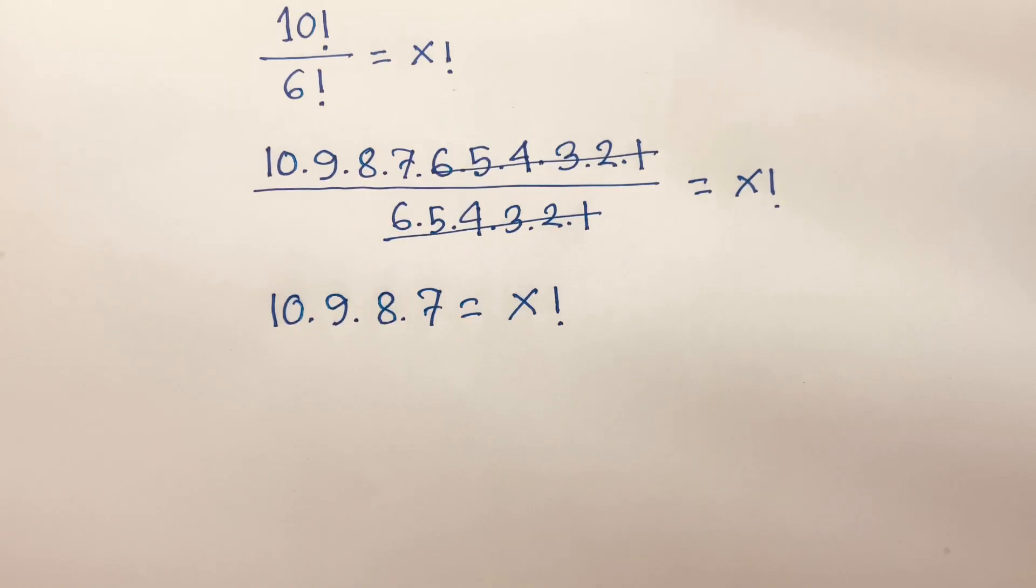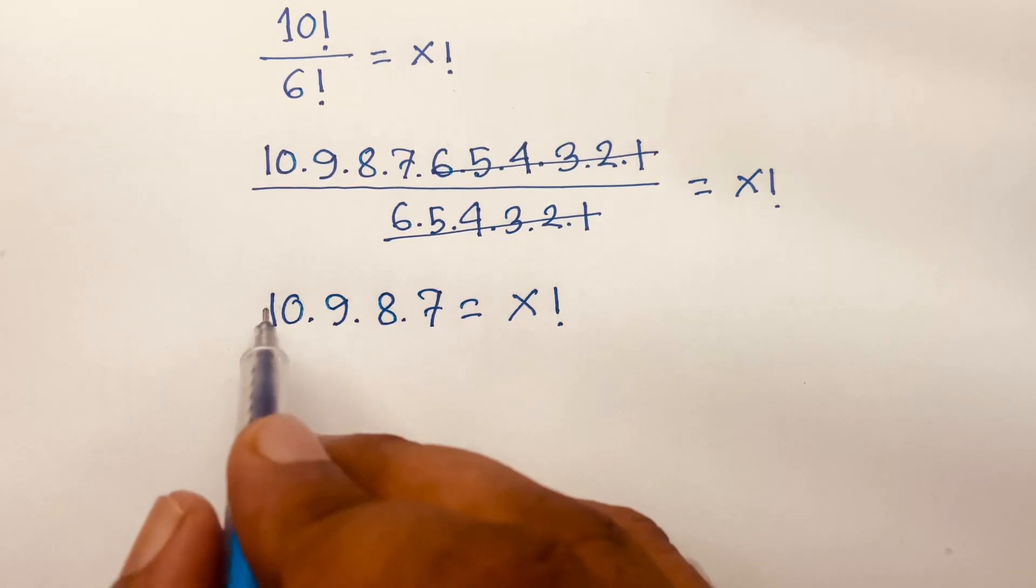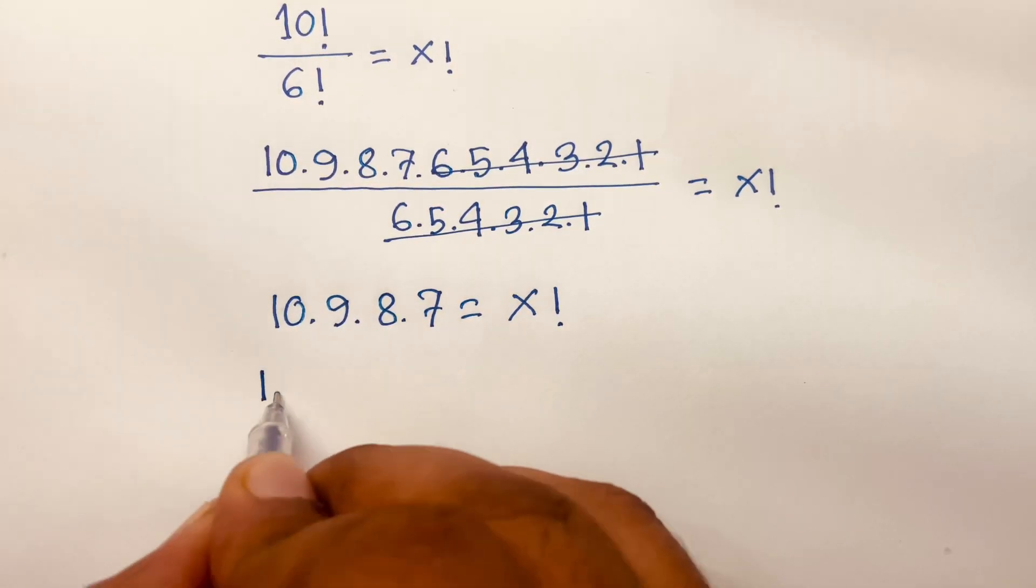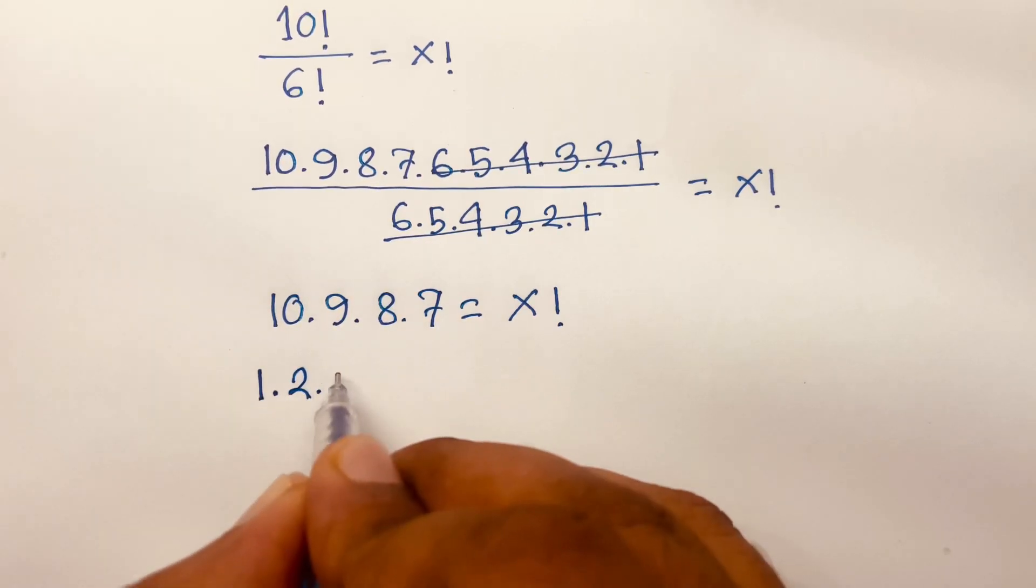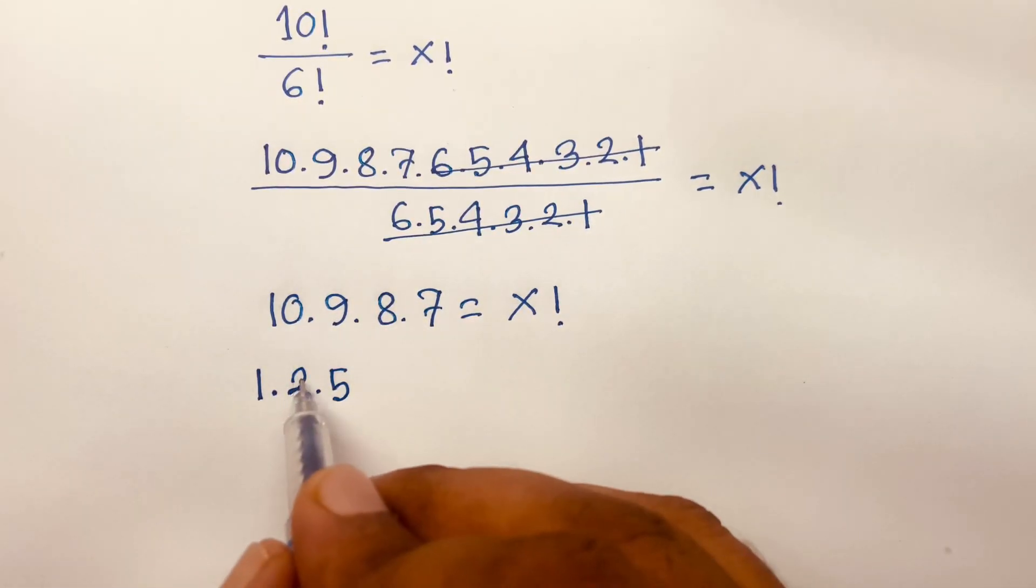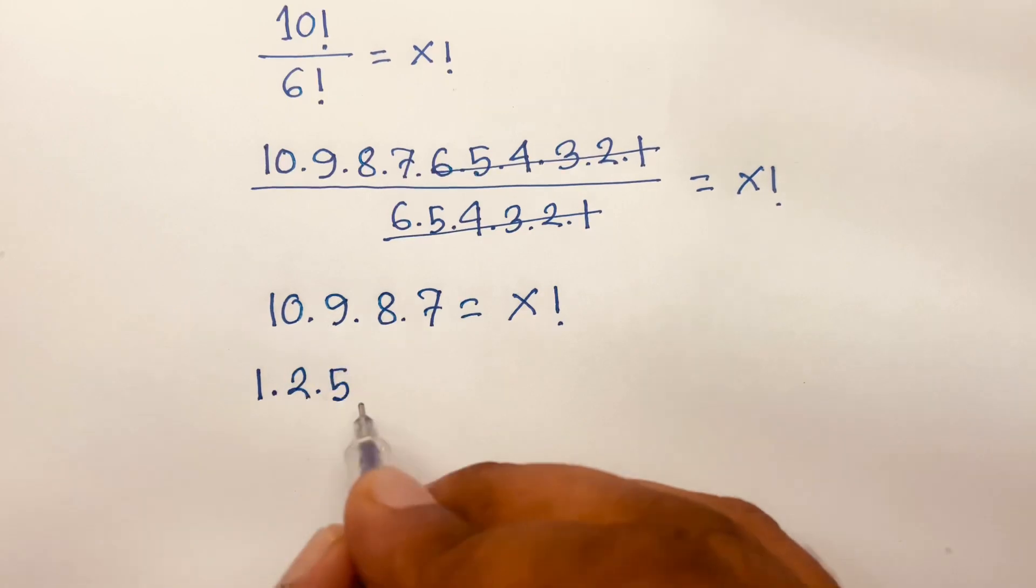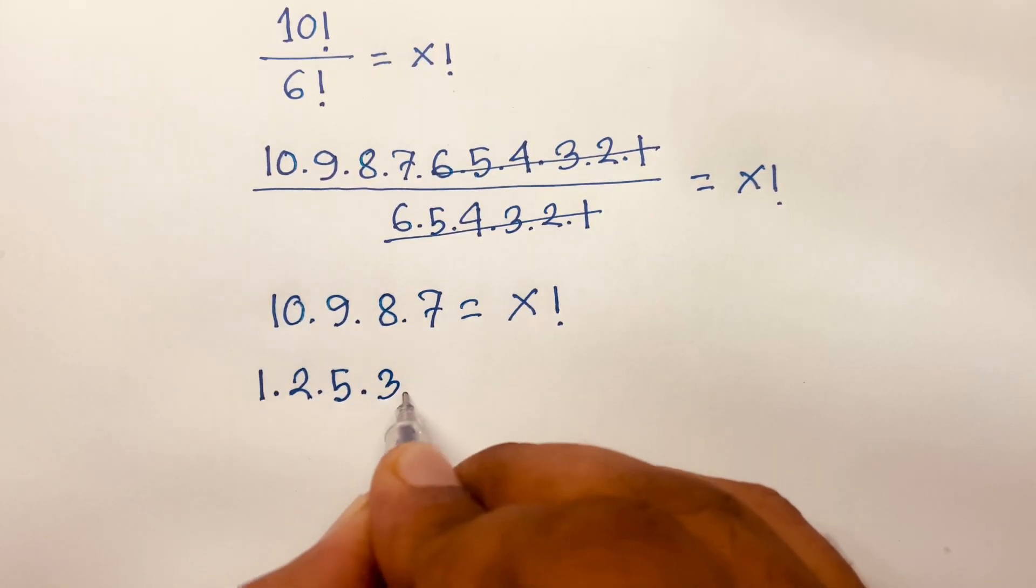Then I can see it will be 10, which is 1 times 2 times 5, because 2 times 5 equals 10. And 9 is 3 times 3.